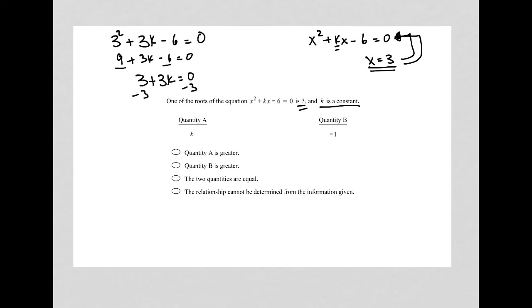Subtract 3 from both sides. And I'm left with 3k equals negative 3. Divide both sides by 3. And I get k is equal to negative 1. So now I know that k is negative 1.